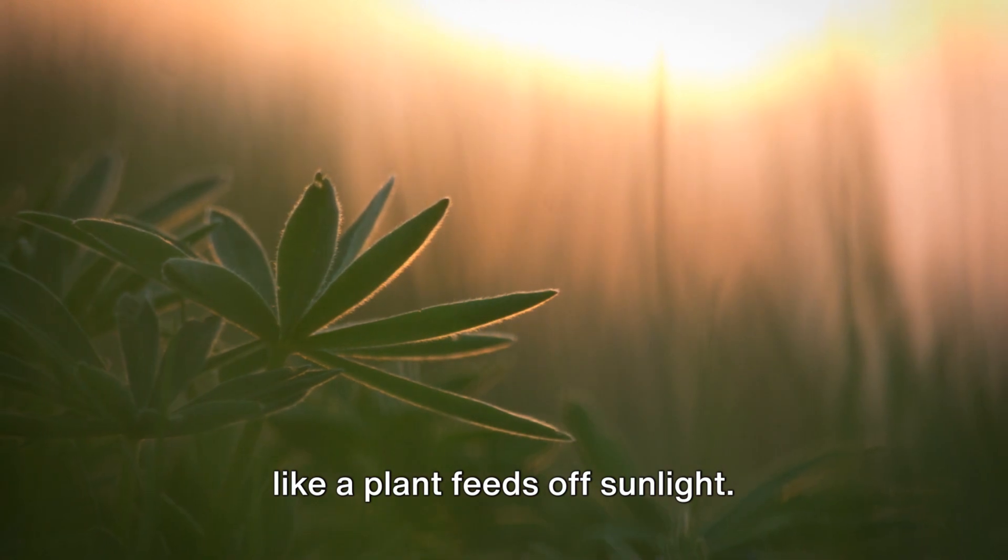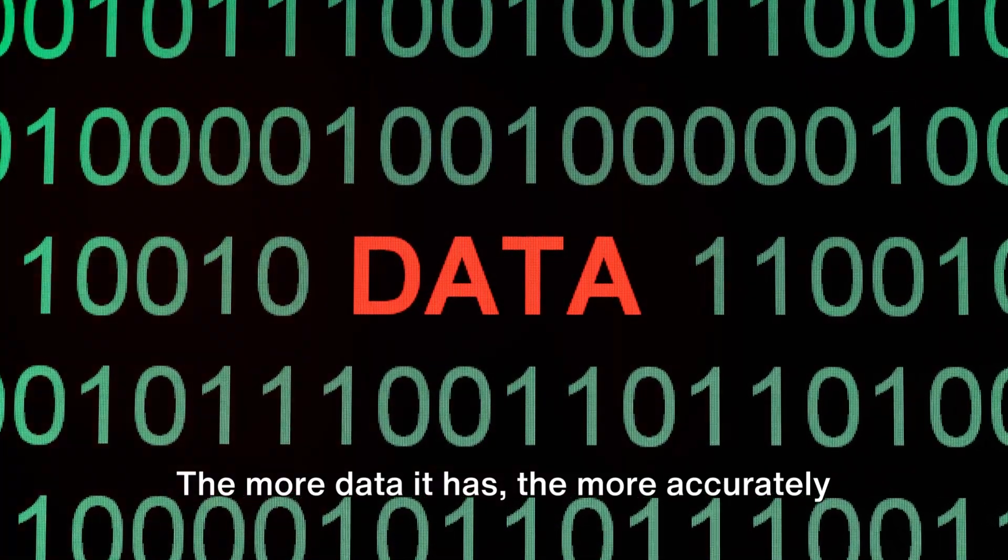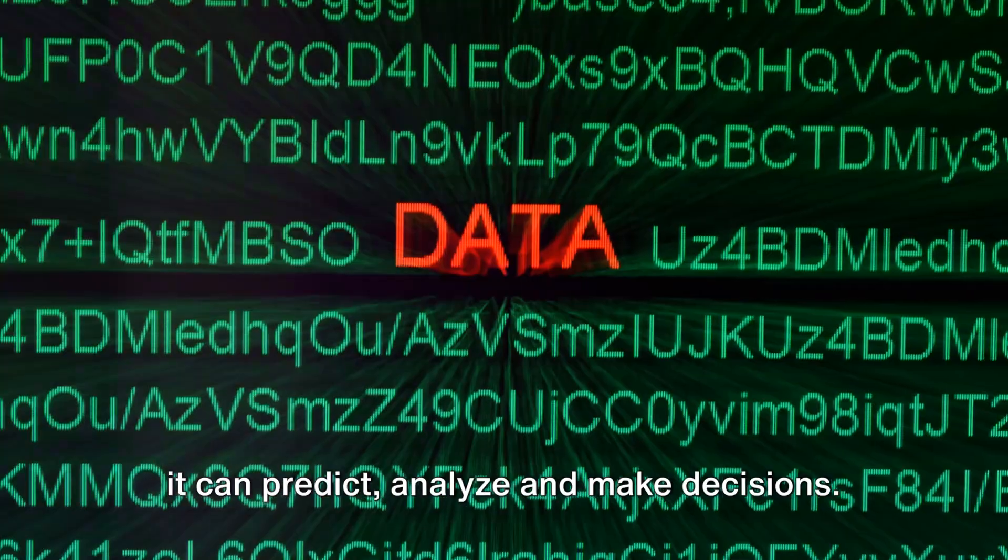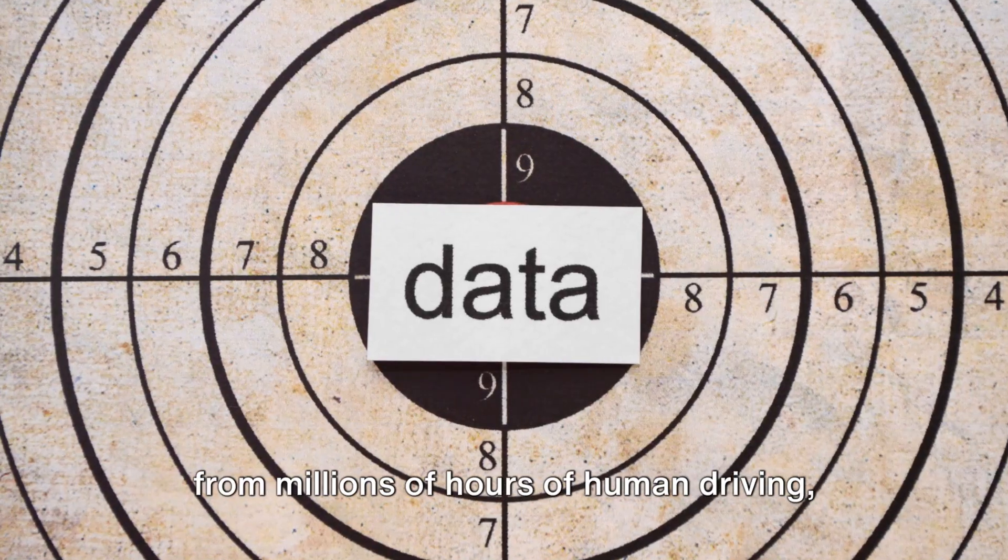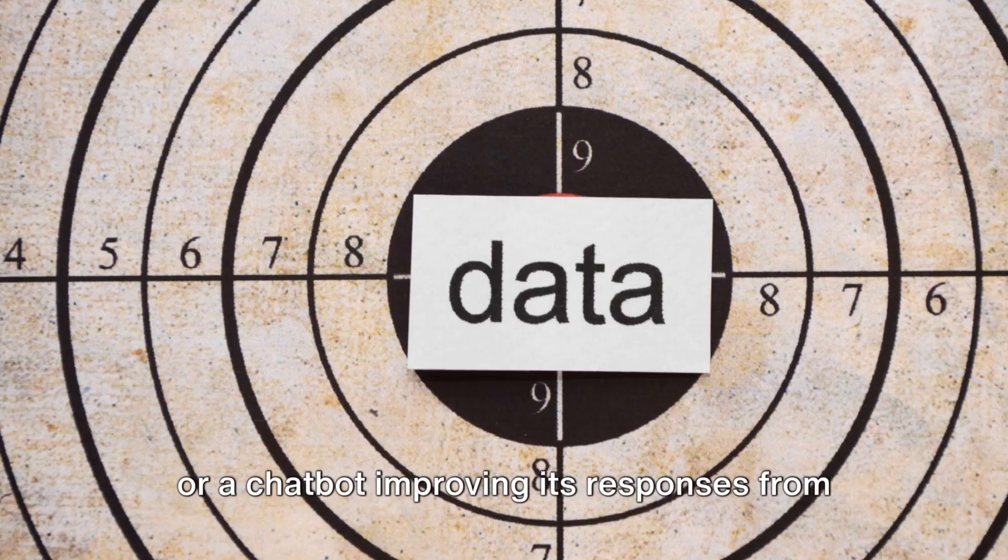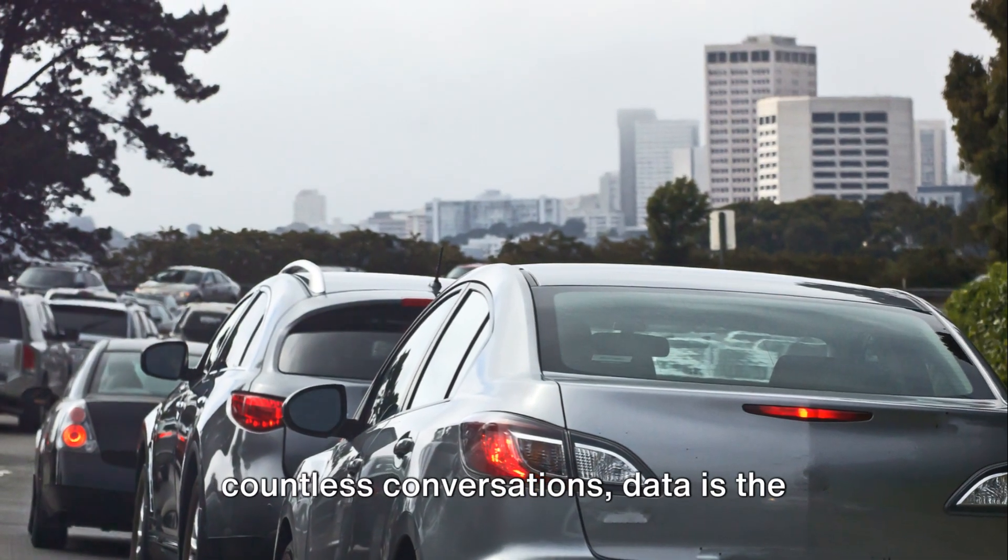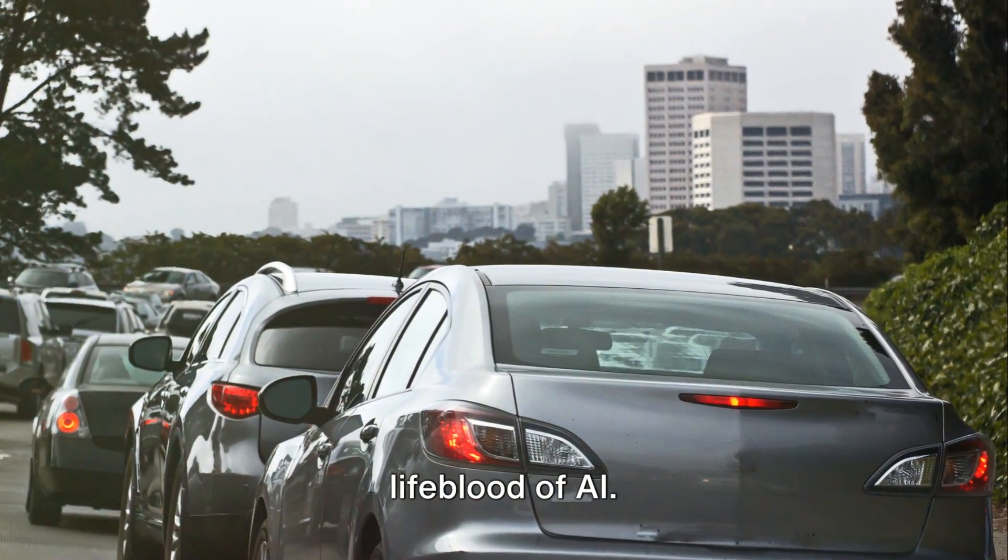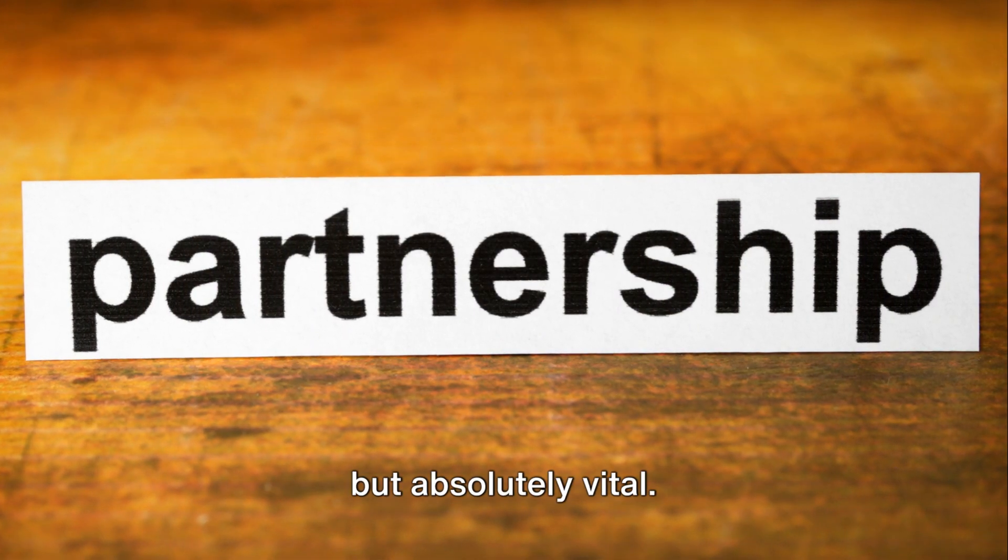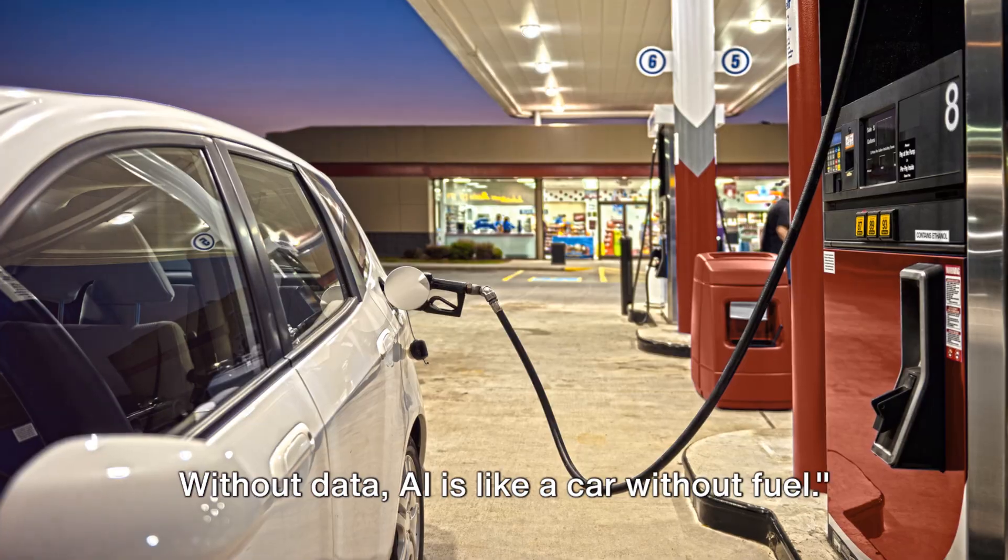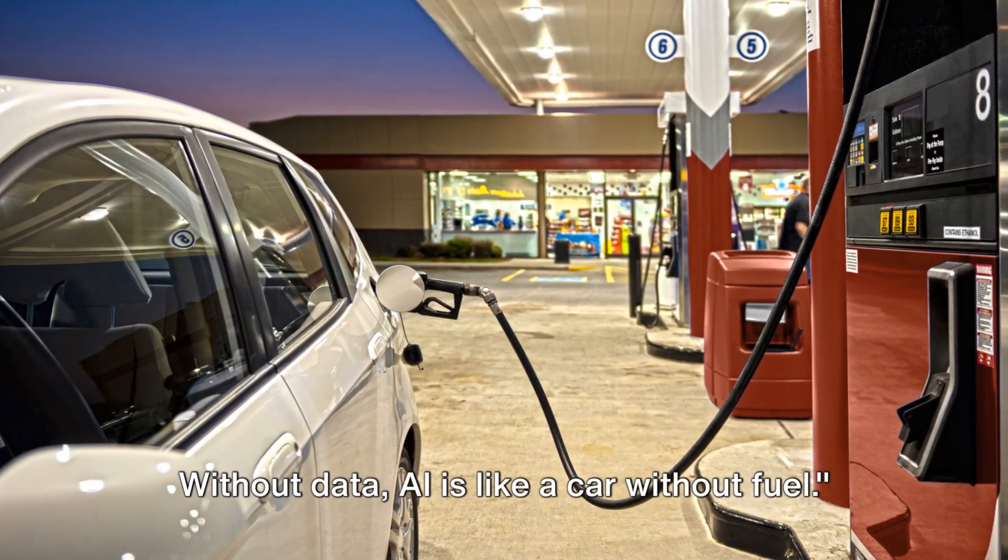AI systems thrive on data, feeding off it like a plant feeds off sunlight. The more data it has, the more accurately it can predict, analyze, and make decisions. Whether it's self-driving cars learning from millions of hours of human driving, or a chatbot improving its responses from countless conversations, data is the lifeblood of AI. It's a silent partner, often overlooked, but absolutely vital. Without data, AI is like a car without fuel.